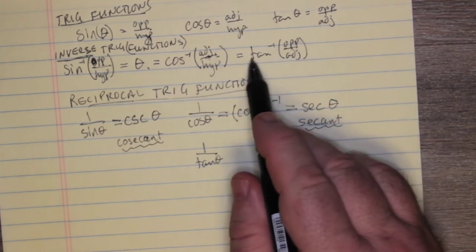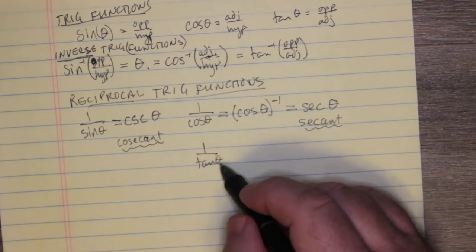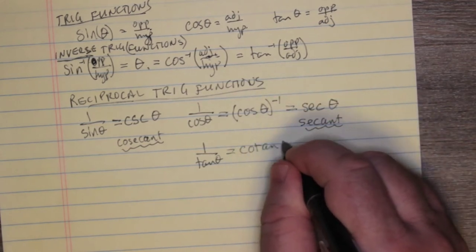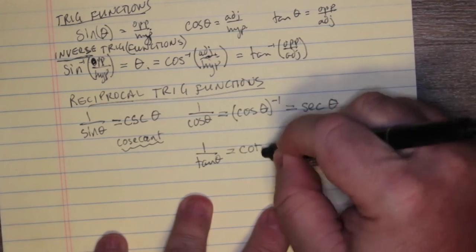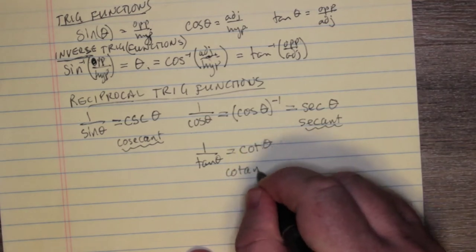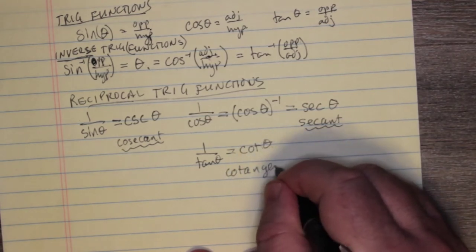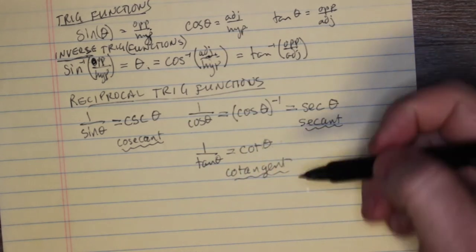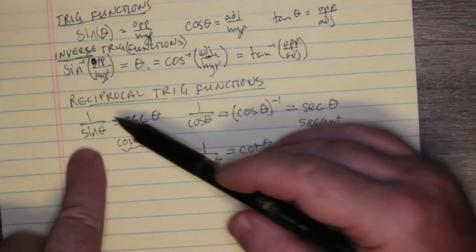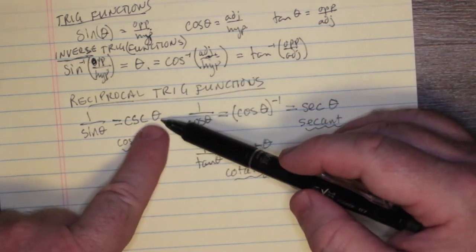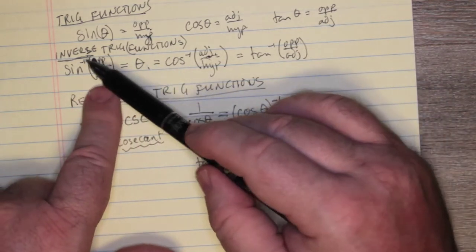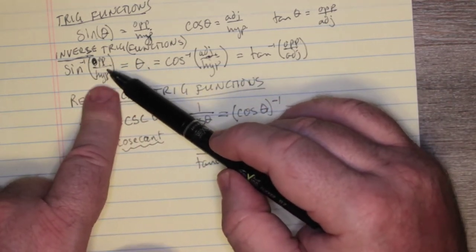One over tan theta — again, that's not the same as the inverse tan — gives you cotangent theta. Cot is the abbreviation, spelled out as cotangent. Notice these are reciprocal in the sense that the input value is still the angle theta, whereas for the inverse function the input is not the angle but the ratio.